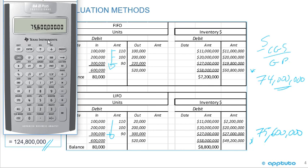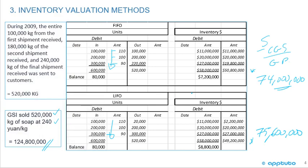So 75,600,000 is the gross profit under LIFO, and 74,000,000 is the gross profit under FIFO. When prices were decreasing, the cost of goods sold under LIFO was less and gross profit was higher. Under FIFO, cost of goods sold was higher and gross profit was lower.